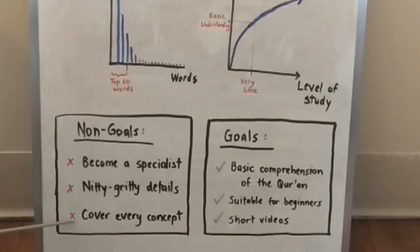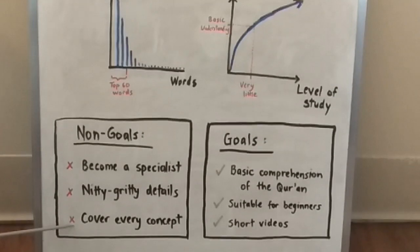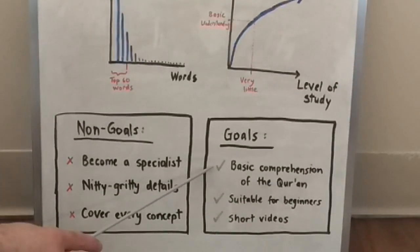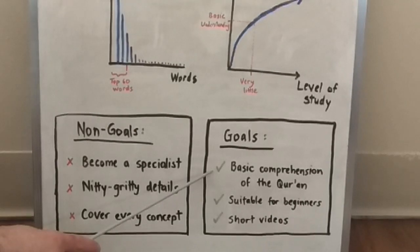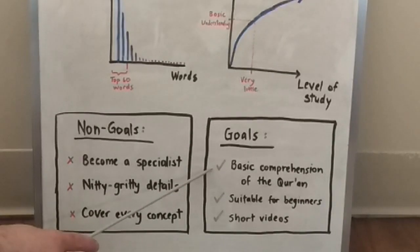With these videos, you will not be able to speak Arabic or understand conversational Arabic. That's not the point here. Instead, our main goal is to have a basic comprehension of the Quran. In other words, you should be able to understand the general gist of most of the words that you read as you recite the Quran.